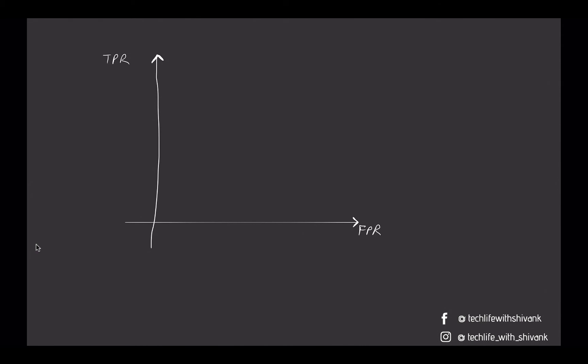As we increase the threshold, initially for a very low threshold both True Positive Rate and False Positive Rate would be very high. As we start increasing the threshold, both True Positive Rate and False Positive Rate start decreasing slowly. Ideally, the True Positive Rate should decrease by a lower amount while the False Positive Rate should decrease by a very high amount.